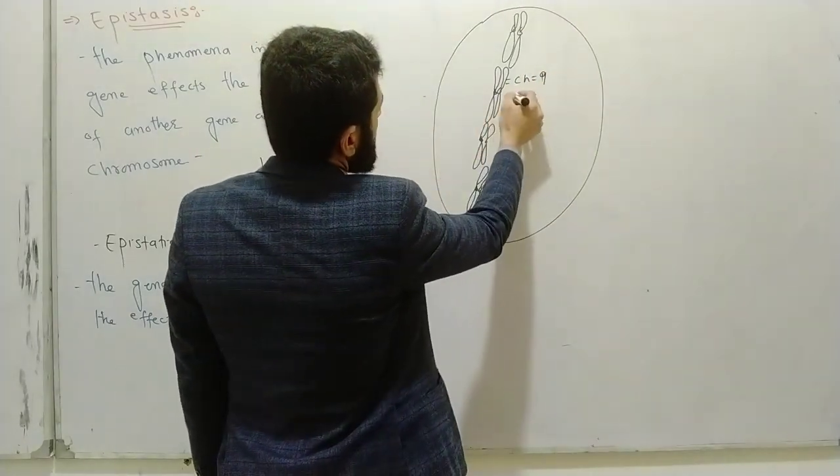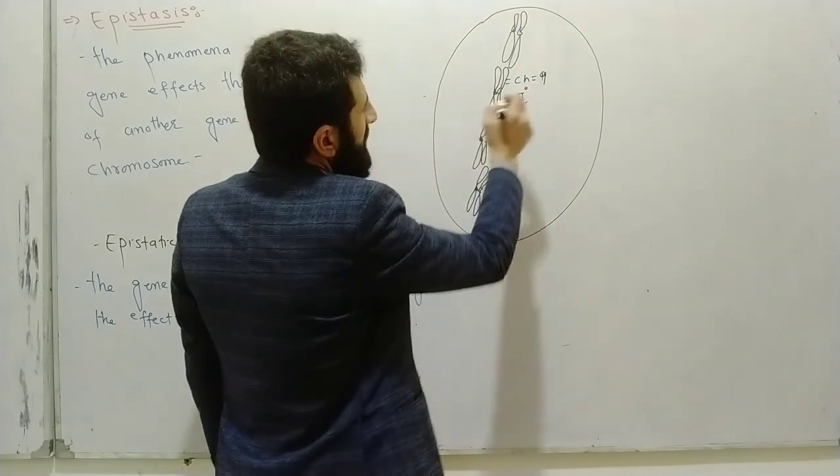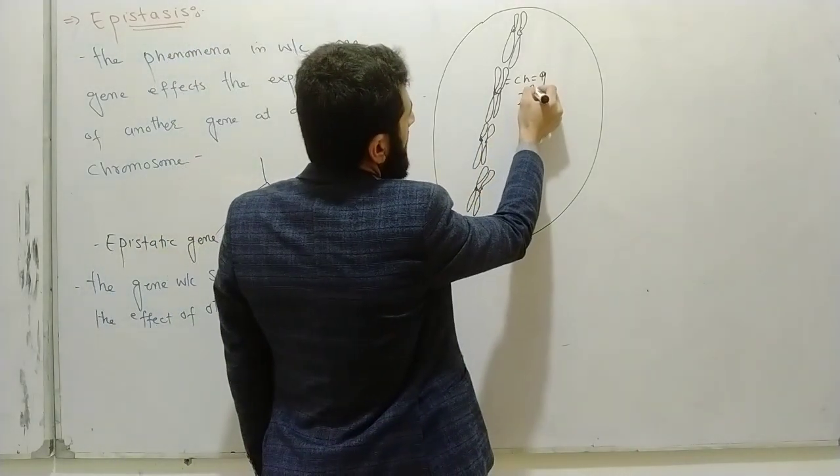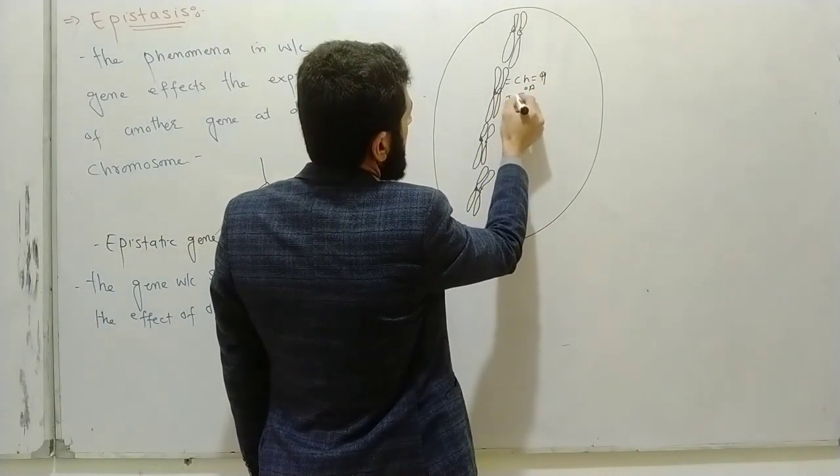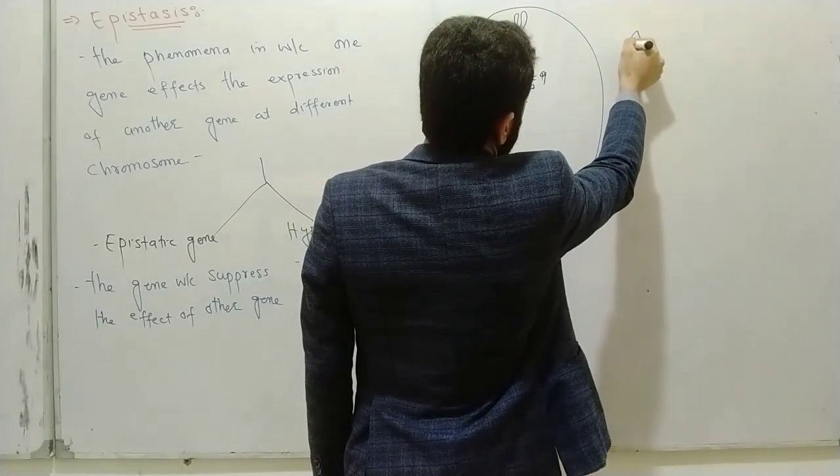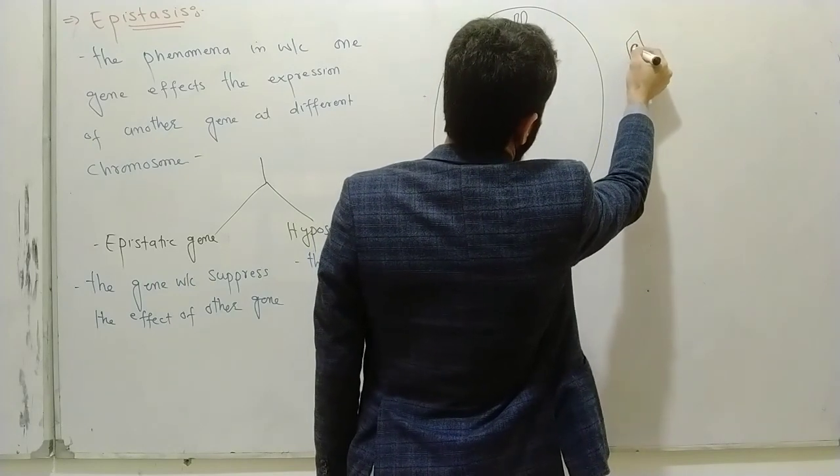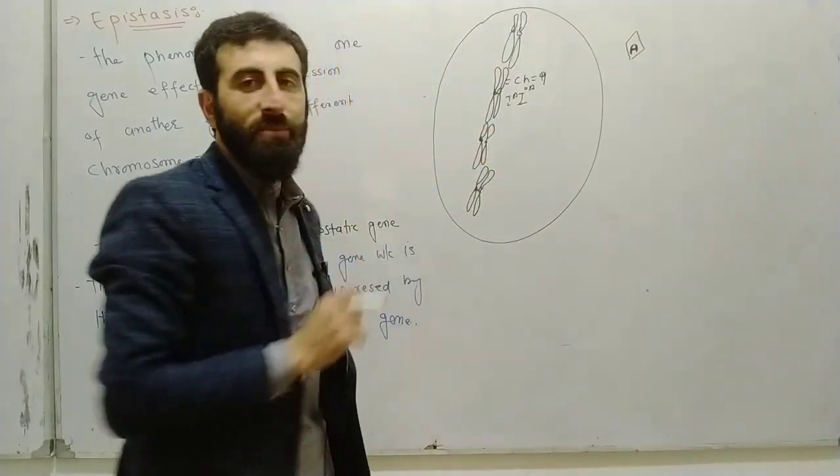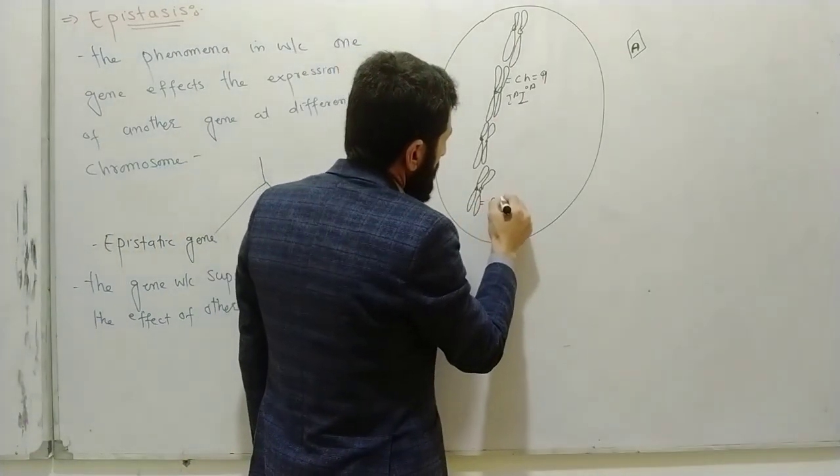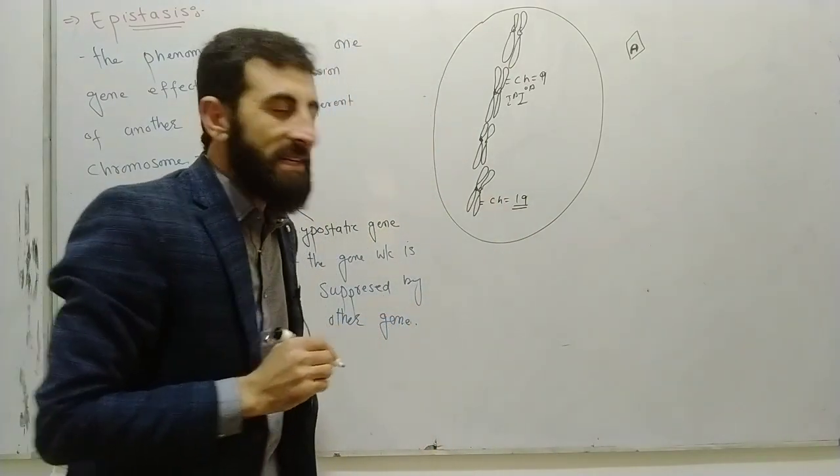Chromosome number nine contains the gene I, which is responsible for the ABO blood group system. This gene has alleles IA, IB, and i on chromosome number 19.